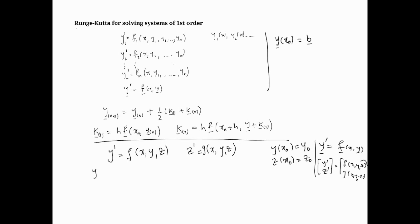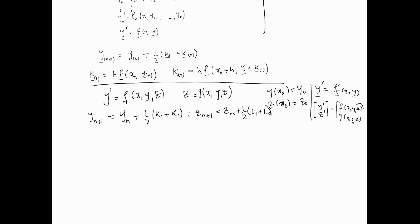If I were to apply that, for instance, to a system, let's take as an example. Here's our system: y dash is f(x,y,z) and z dash is g(x,y,z). So what we're looking at is a system of two equations here.